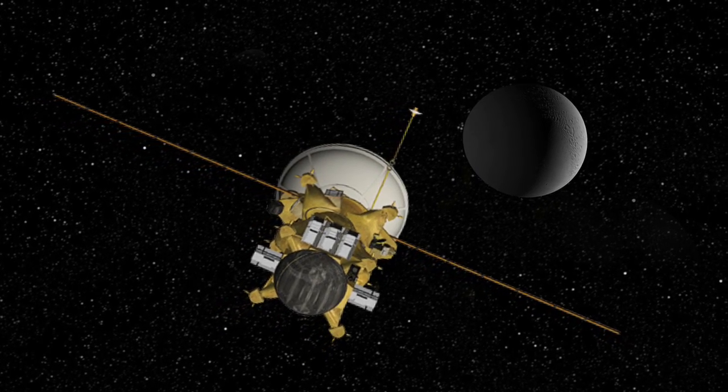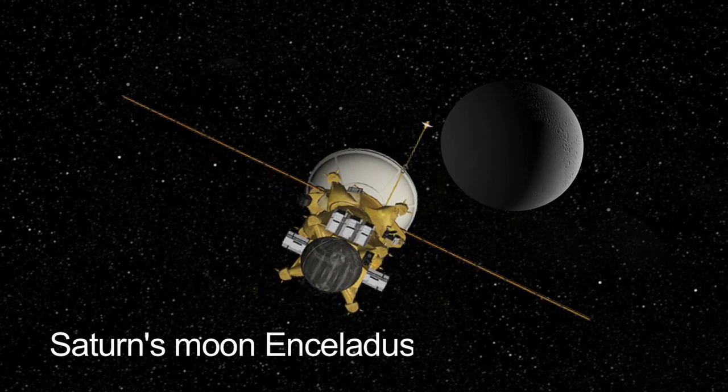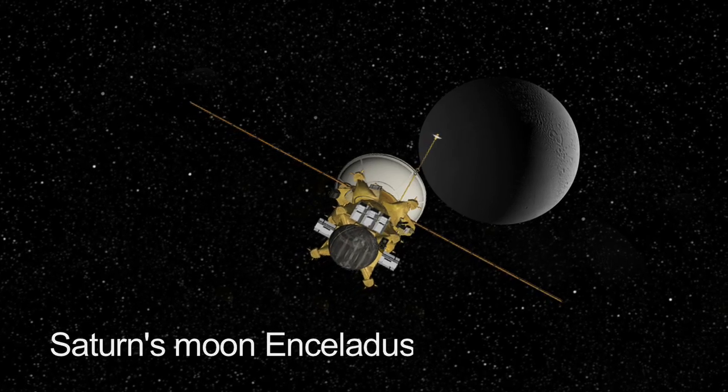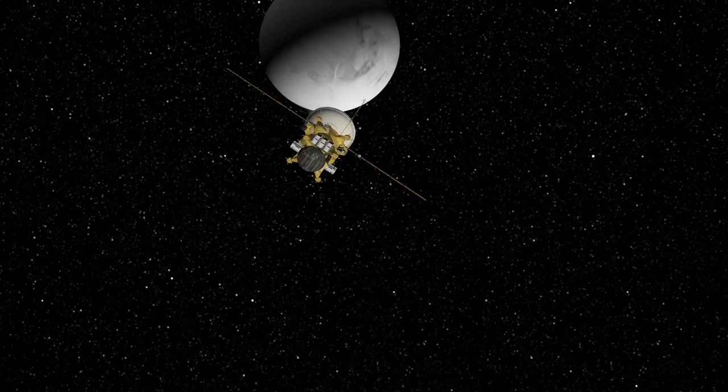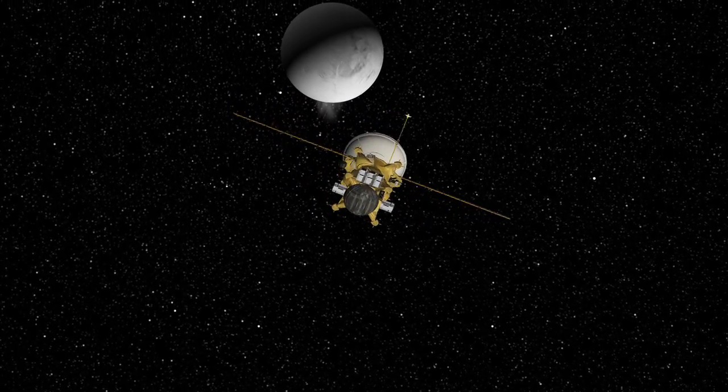The Titan Saturn System mission also will go to Enceladus, the tiny moon a thousand times smaller than Titan, which has volcanoes, geysers essentially, that are spewing material from the inside of this moon outward.